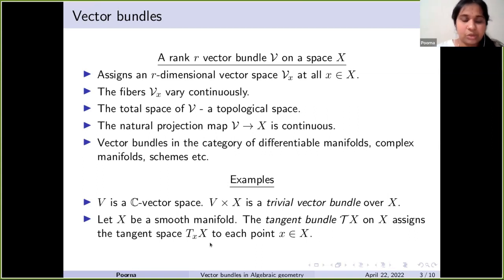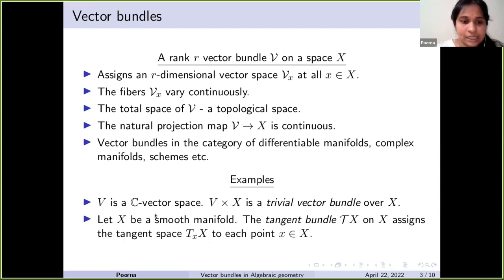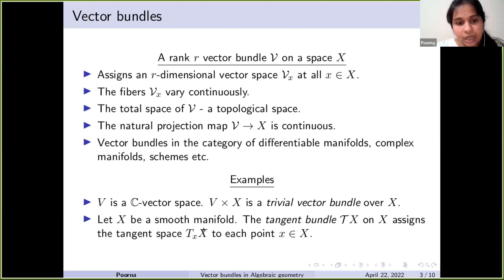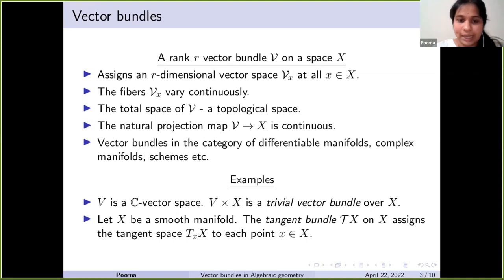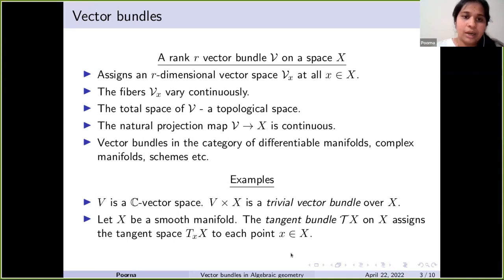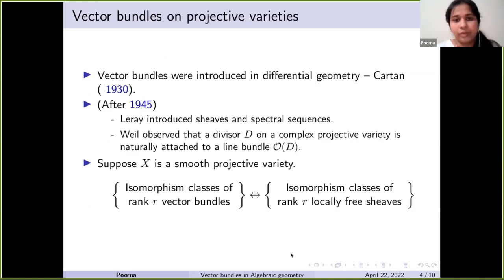Some simple examples of vector bundles: if we fix the same vector space V over each point of X, we get the trivial vector bundle. If X is a smooth manifold, we can attach the tangent space to the manifold at each point x — these tangent spaces glue together very nicely to give a vector bundle called the tangent bundle.